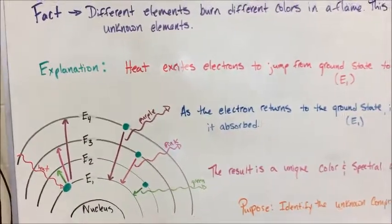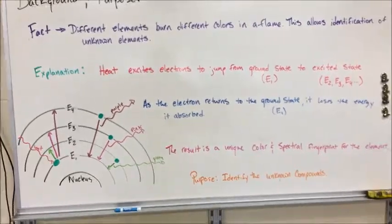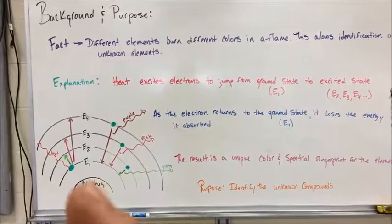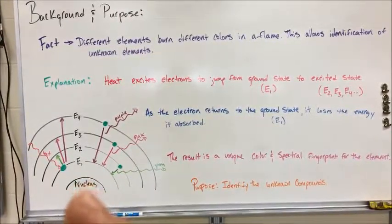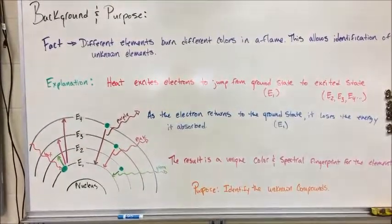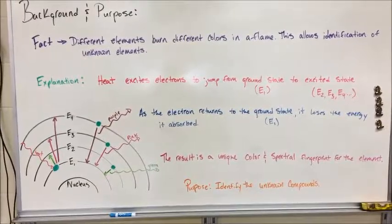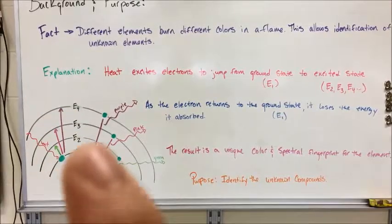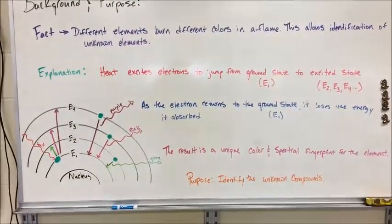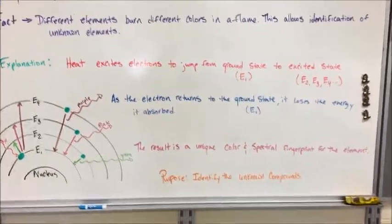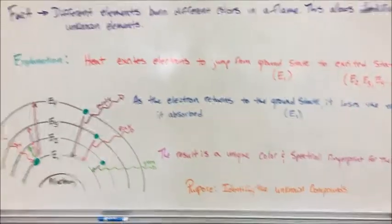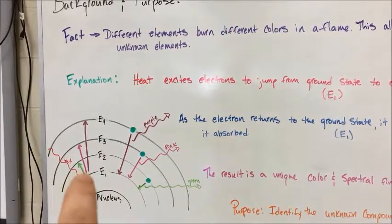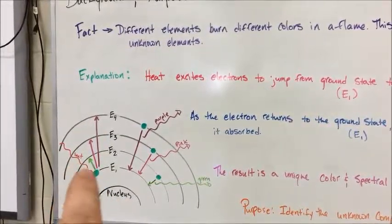Heat excites electrons to jump from the ground state to the excited state. Down in the bottom left over here, there's a picture of a generic Bohr diagram with a nucleus and four energy levels. We're talking about the simplest scenario where we've got one electron in the first energy level, and it can be jumped up to any of the other options out there. So it absorbs heat and gets excited. That's that red line coming in over here. The heat comes in and hits that electron. It can jump to any one of these locations.